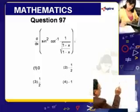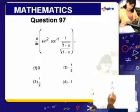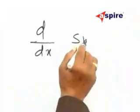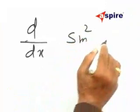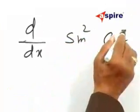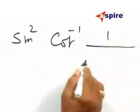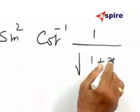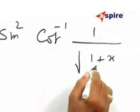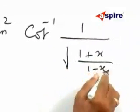We are asked to evaluate this value: d by dx of sin squared cot inverse of 1 by root of 1 plus x divided by 1 minus x.